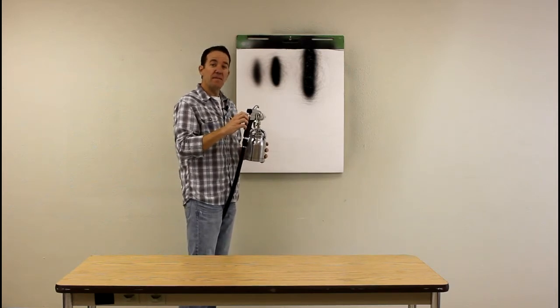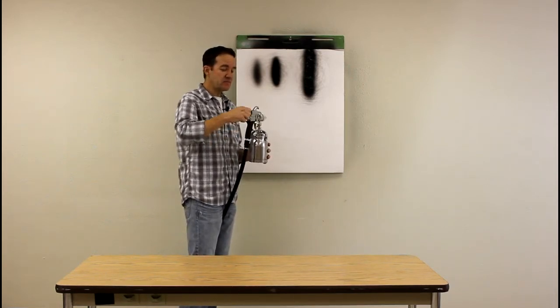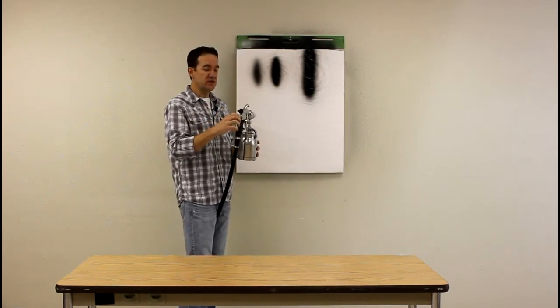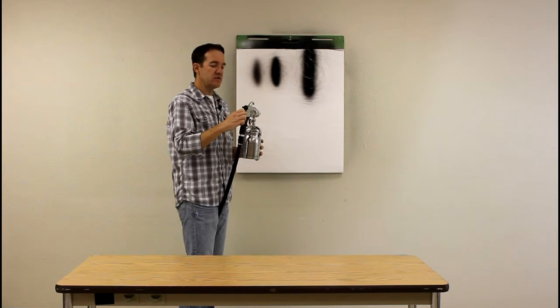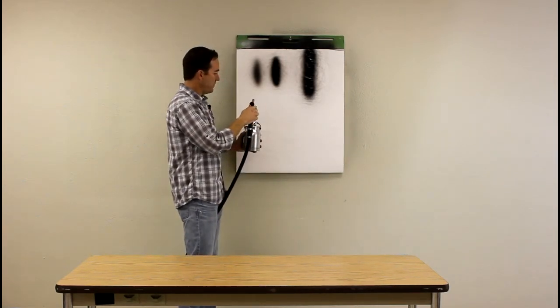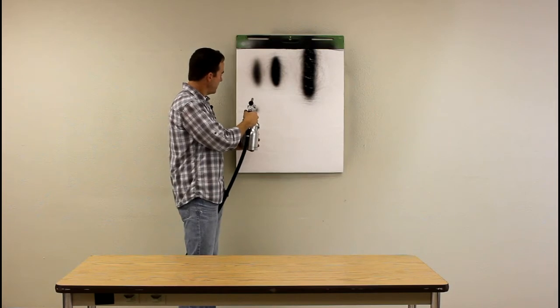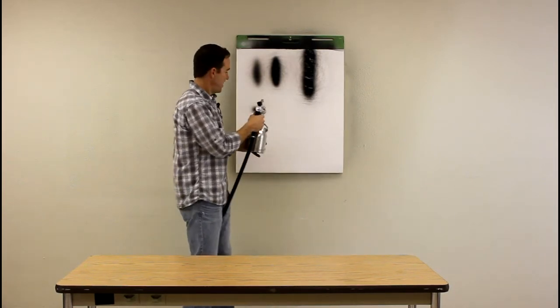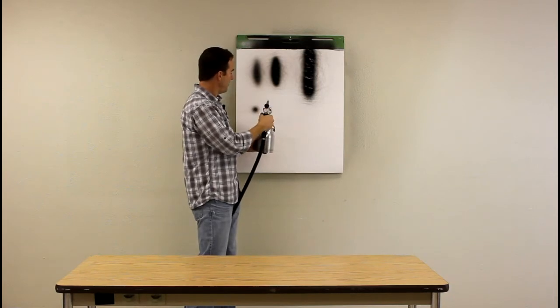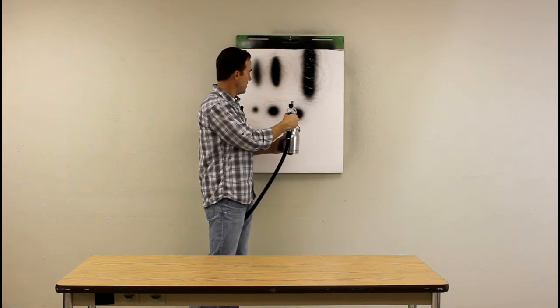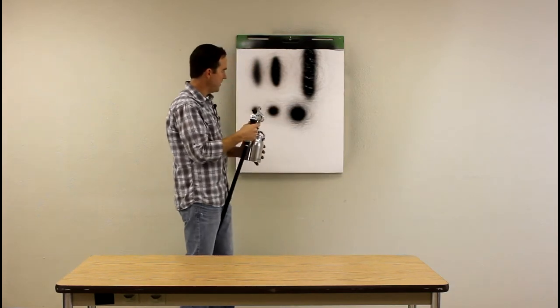So let me turn the material knob back in some and I'll turn the fan control knob down into the horizontal position and I'll turn the material control just a little from off. And as you can see it just gives us a really small fine dot. And then if I continue to open that it'll give us more and more until it makes a big mess.